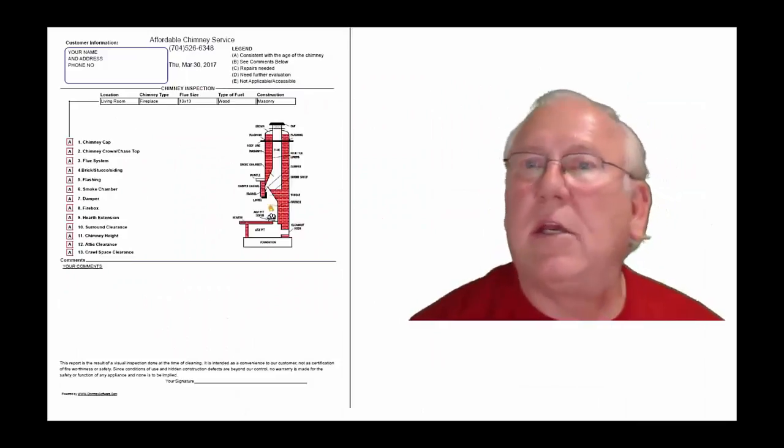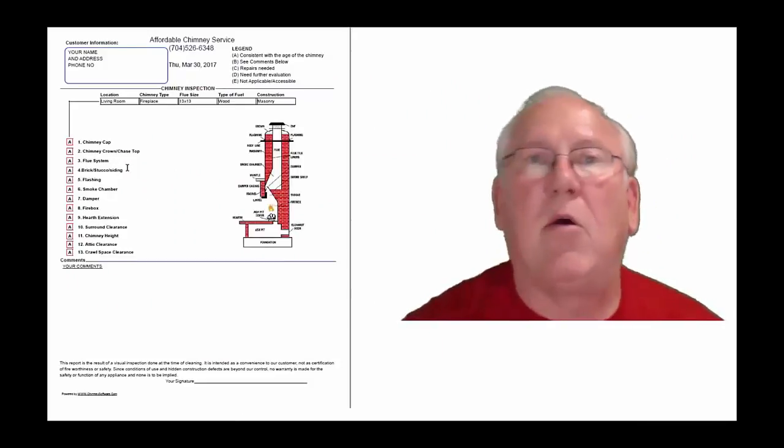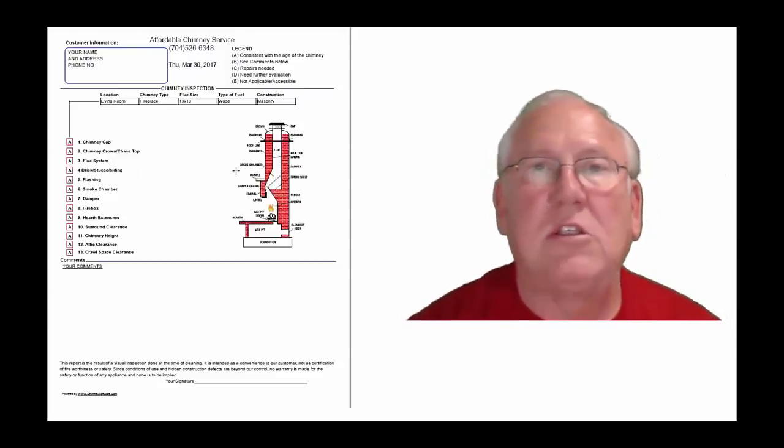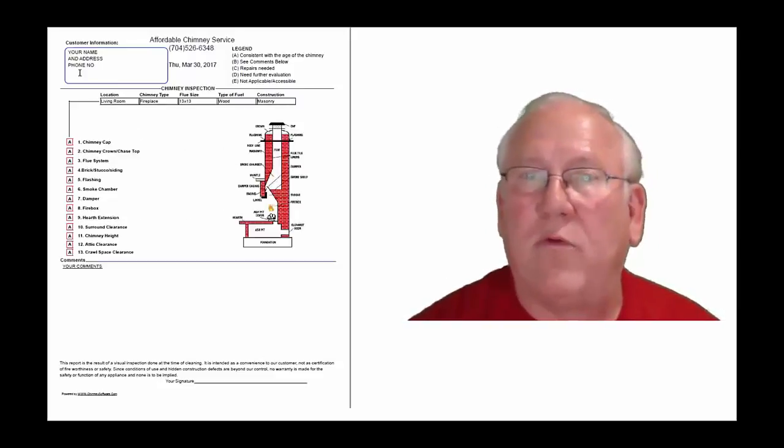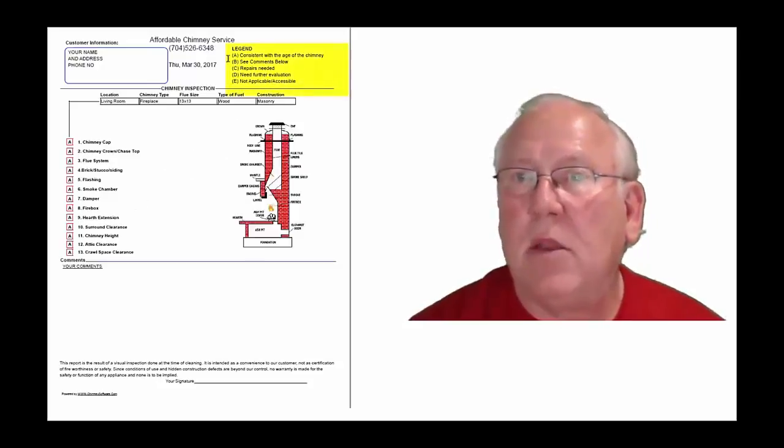Okay, now let's take a look at the inspection report and see how it reads out. This is a generic report. This is exactly what you will get. Only your information obviously will be filled into all these blanks. The upper right-hand corner of the report is the legend.